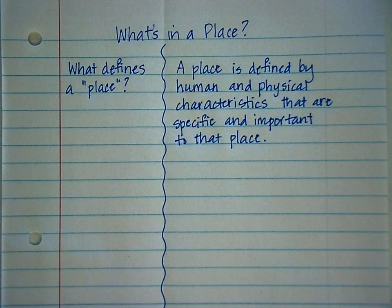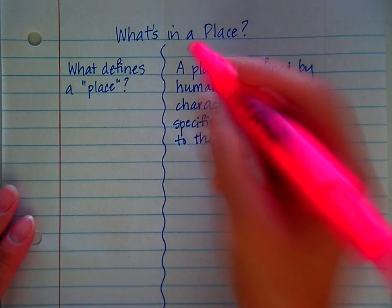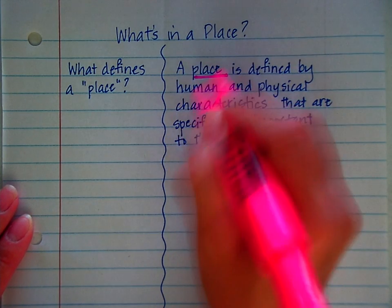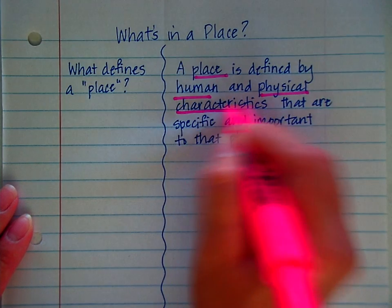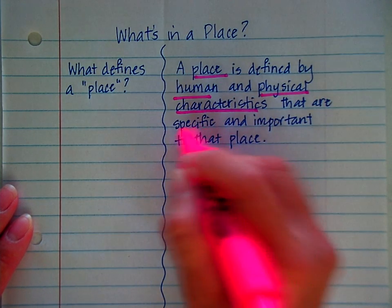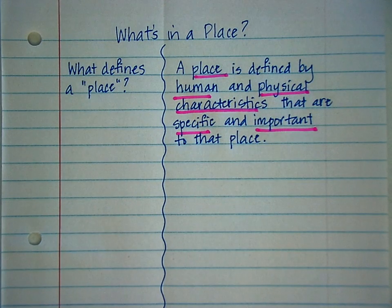Now take your highlighter, and I'm going to underline, but I'd like you to highlight the words, some key words for the definition for place. Let's go ahead and highlight place, human, physical, characteristics, specific, and important. Remember the purpose of highlighting is so that key words stand out.